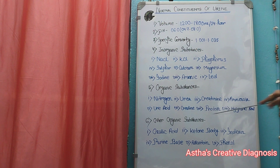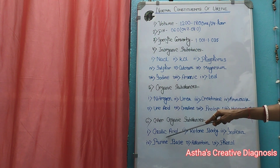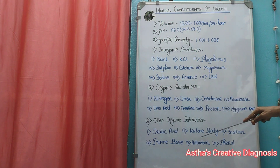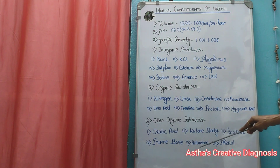Other organic substances include oxalic acid, which indicates purine metabolism, as well as allantoin and creatinine.